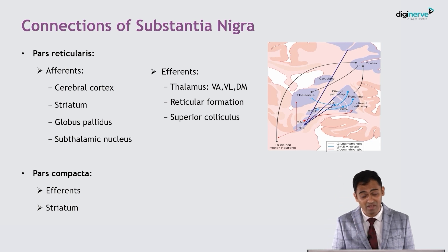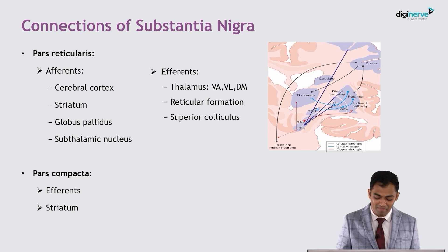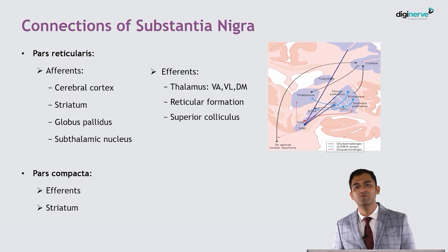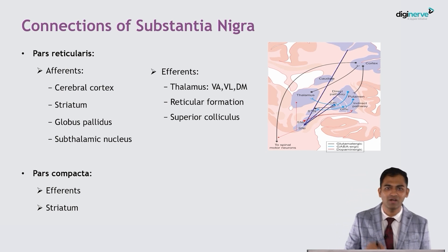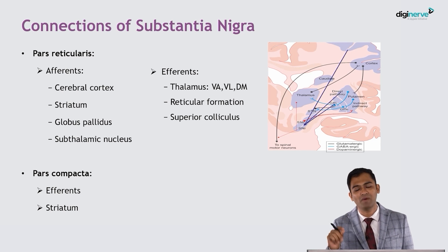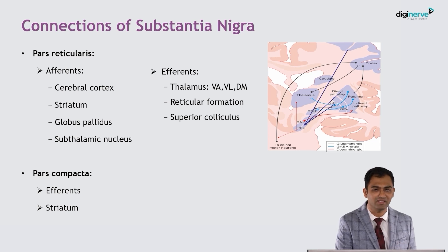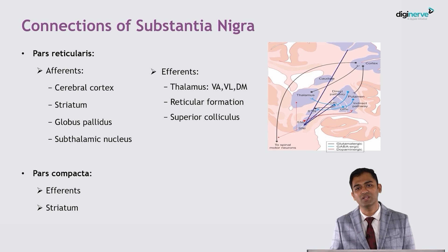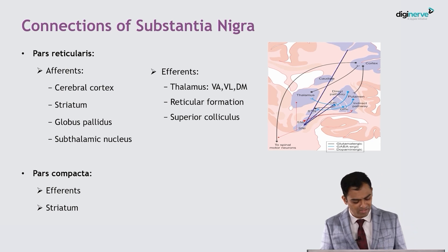Pars reticularis will give efferents again like globus pallidus interna — it will give efferents to the thalamus, the reticular formation, and the superior colliculus. An important point to remember: pars reticularis is actually a functional counterpart of globus pallidus interna. Though it is structurally located somewhere else in the midbrain, it is a functional counterpart of globus pallidus interna, and so it will have all the same projections.